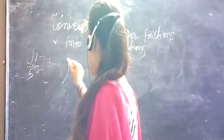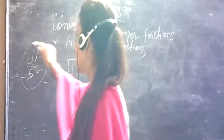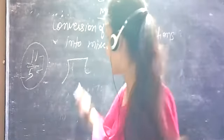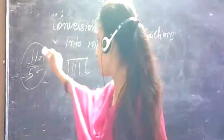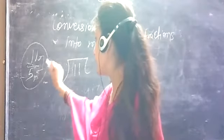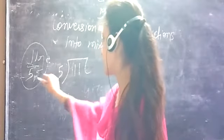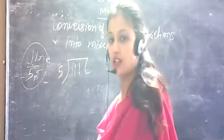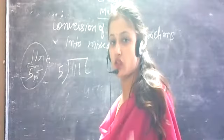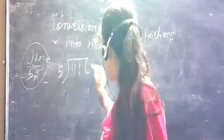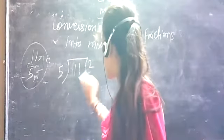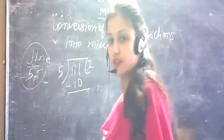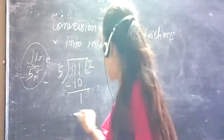Now, if we are given a fraction, we change the improper fraction. In this class, 11 upon 5 is given — the numerator is 11 and the denominator is 5. We divide 11 by 5. 2 times 5 is 10, so 2 times 5 equals 10.